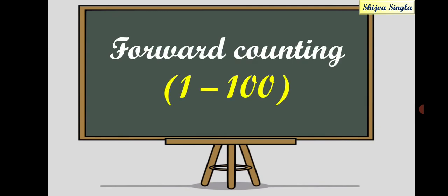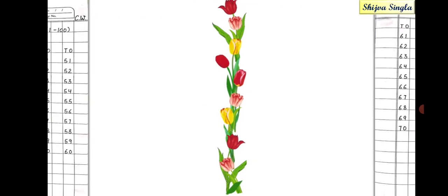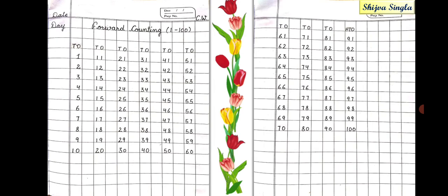Now, moving ahead to the forward counting from 1 to 100. This, you have already done in your previous class as well. First of all, you will mention the date and day on the top left corner of the margin. Then, on its opposite side, you will write CW.